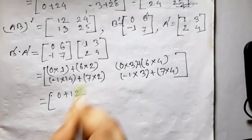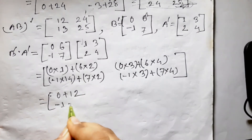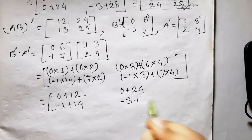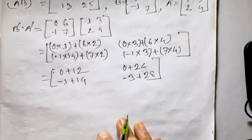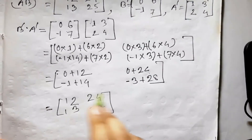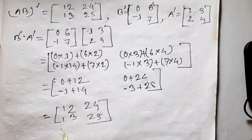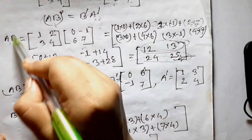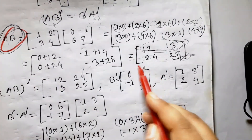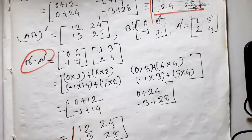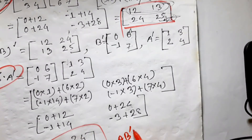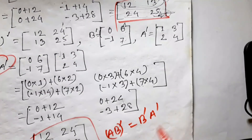How about the transpose? This is the result. Now we will see that the result is 12, 24, 25. We will see the result. A and B will look at the result. We will mark the result. We will see that B and A will look at the result, and the result is the same. Now we will see that A B prime equals B prime A prime — proof.